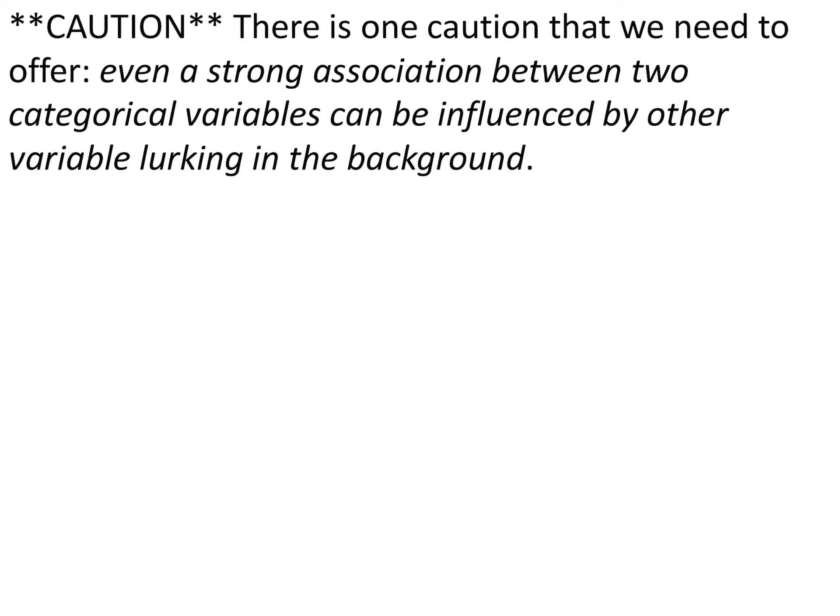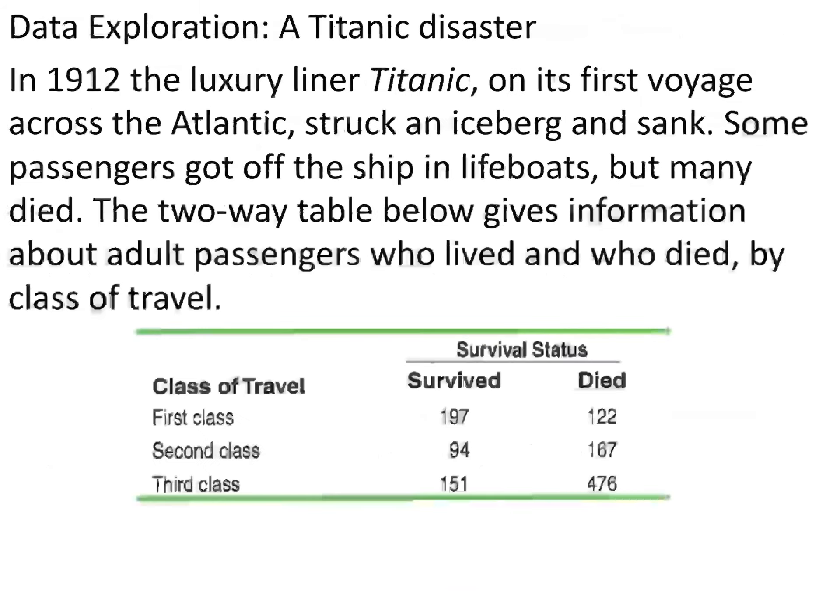You need to be cautious. Even a strong association between two categorical variables can be influenced by other variables lurking in the background. Let's take a look at the Titanic. In 1912, the luxury liner Titanic, on its first voyage across the Atlantic, struck an iceberg and sank. Some passengers got off the ship in lifeboats, but many died. The two-way table below gives information about adult passengers who lived and who died by class of travel.